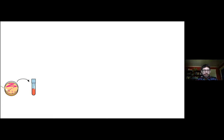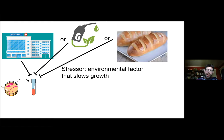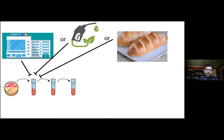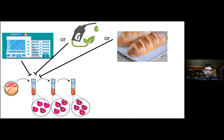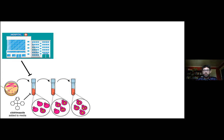The basic paradigm of these experiments is that students take a yeast, inoculate it into a test tube of liquid yeast media, and we add a stressor — some environmental factor that slows the growth of yeast. We're particularly interested in stressors relevant to domestication or human health processes. This could be something like changing the salt concentration, relevant to baking, or adding an antifungal, relevant to drug resistance in distantly related pathogenic yeasts. We chose to work with a stressor called clotrimazole, an antifungal drug.